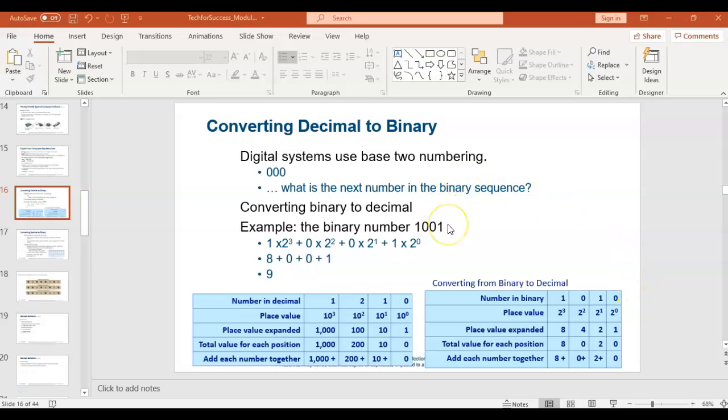I have another example here, so again, converting binary to decimal. Here's the binary number 1001. So go ahead and take a look at how this is done. It uses the exact same process.